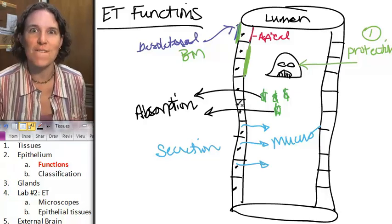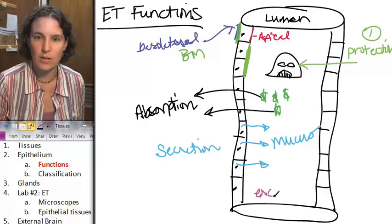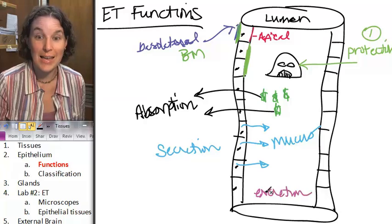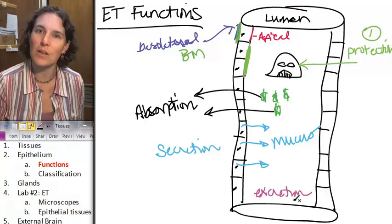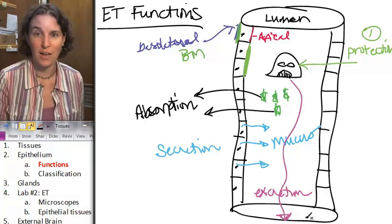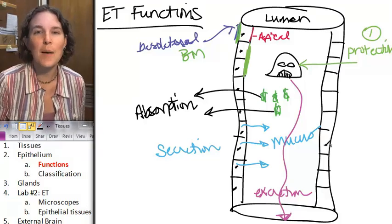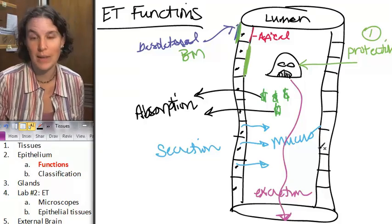And then that illustrates our final function of epithelial tissue, which is excretion. Yes, I now will excrete Darth out of my lumen, of my tube in my body. And the epithelial tissues can help make that happen.